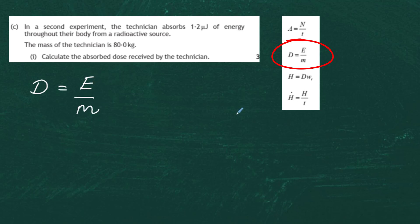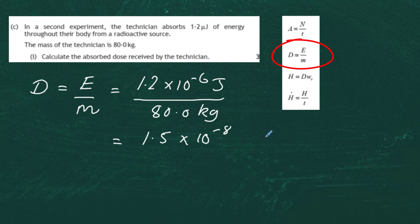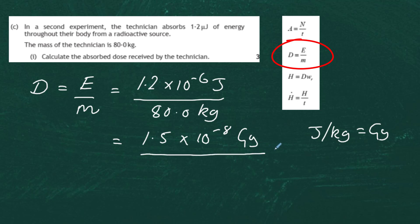The absorbed dose D equals energy divided by mass. The energy is 1.2 microjoules and the mass is 80.0 kilograms. Dividing these gives a value of 1.5 × 10⁻⁸. The unit of absorbed dose is joules per kilogram, which equals one gray (Gy). So the absorbed dose is 1.5 × 10⁻⁸ grays.